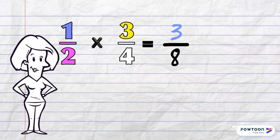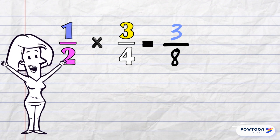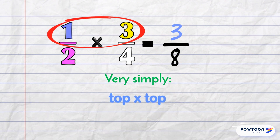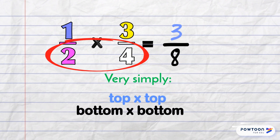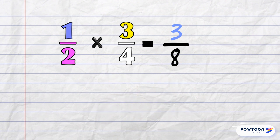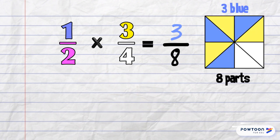Very simply, we multiply the numerators together—top times top—and then we multiply the denominators together—bottom times bottom. And look at that! We get exactly the same answer as I did with the diagram that took me ages to make and color.